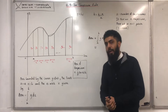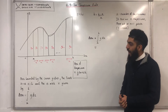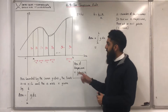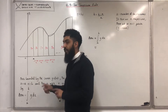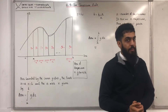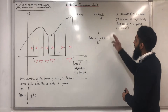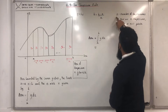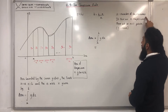How do I work out h? To work out h, you take b, subtract a, and divide by n because there are n trapezoids. So the formula for h is h equals (b minus a) divided by n. I repeat: n represents the number of trapezoids.